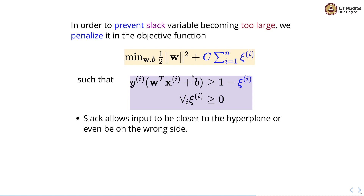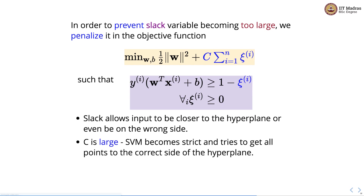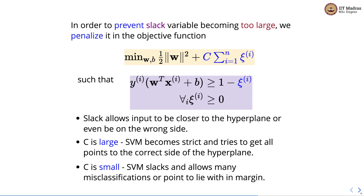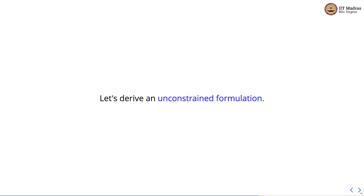The slack variables allow inputs to be closer to the hyperplane or even on the wrong side. When C is large, the SVM becomes strict and tries to get all points to the correct side of the hyperplane. When C is small, the SVM is more lenient and allows many misclassifications or points to lie within the margin. Let's derive an unconstrained formulation.